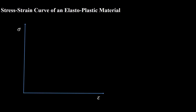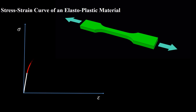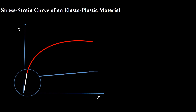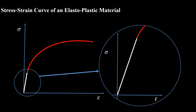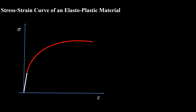When we apply one-dimensional tension to a metallic sample, at first we observe a straight line in the stress-strain curve. This region is known as the elastic region, where deformation is recoverable — by removing the applied load, the material returns to its initial state and strain becomes zero. The slope of this line shows the Young's modulus of the material. After this region, the material starts to deform plastically, and the onset of plastic deformation is known as the initial yield stress.